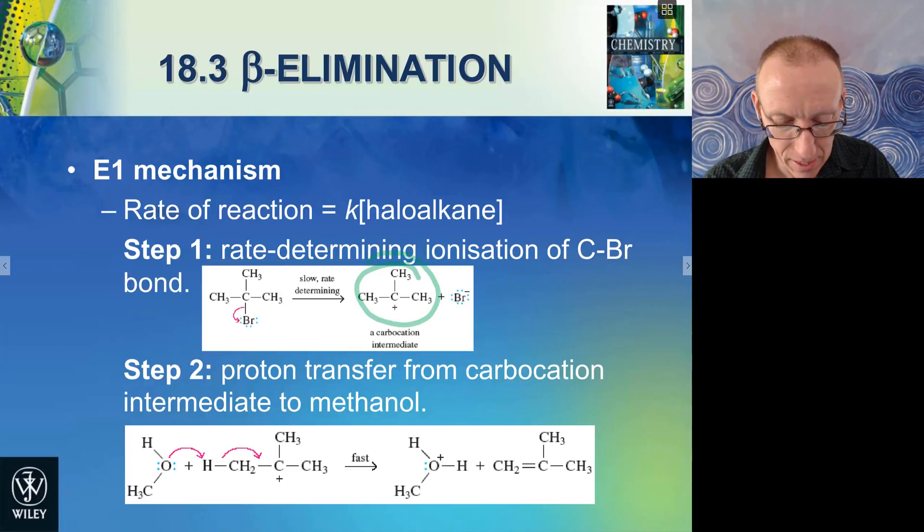So once we've formed that carbocation, it can then combine with a nucleophile via an SN1 reaction pathway, or it can undergo an elimination. So we can get a base come in, take off these protons here, break that bond there to make an alkene such as this, and we form the conjugate acid of the base that we used over here.